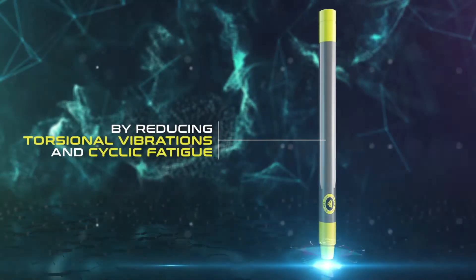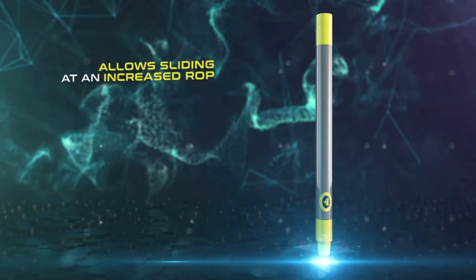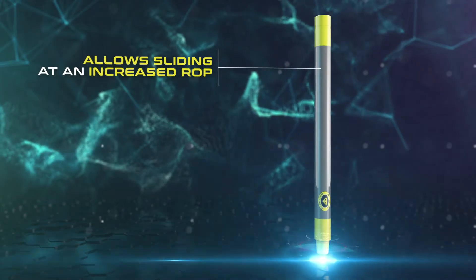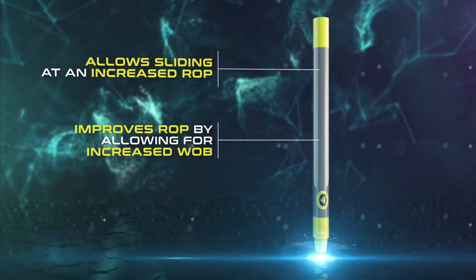By reducing torsional vibrations and cyclic fatigue, the Tomcat DERT allows sliding at an increased rate of penetration, improves rate of penetration by allowing for increased weight on bit.